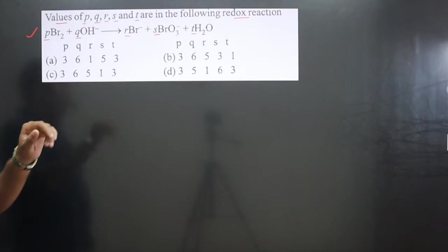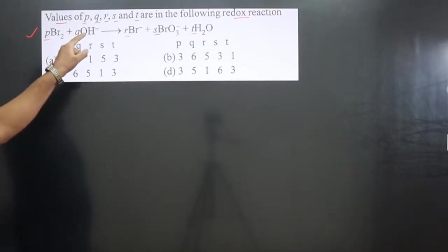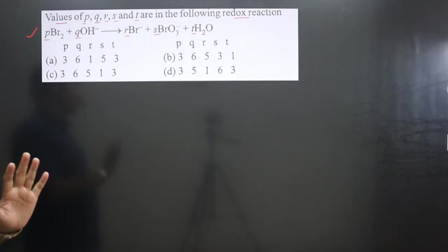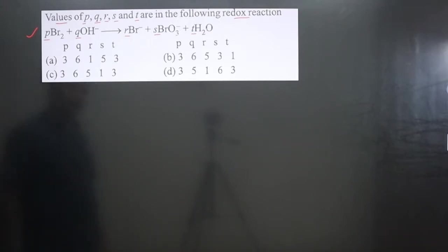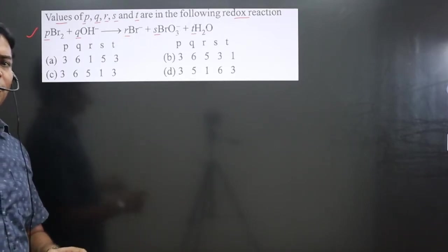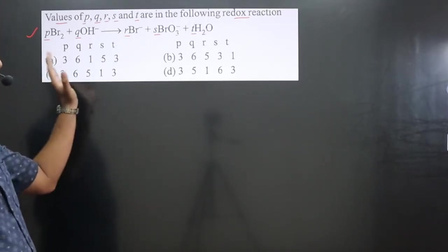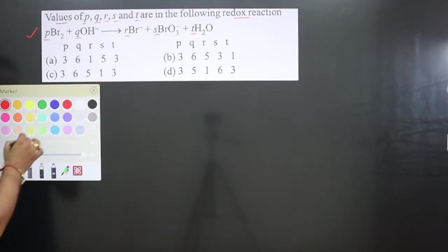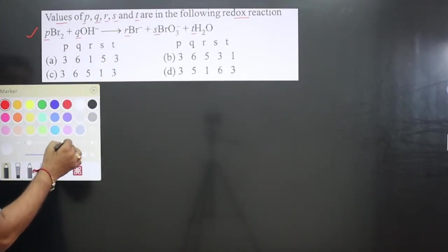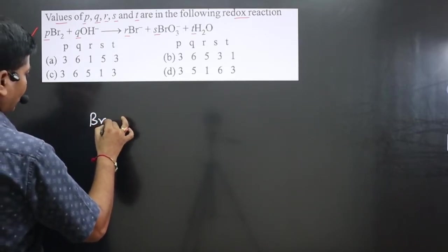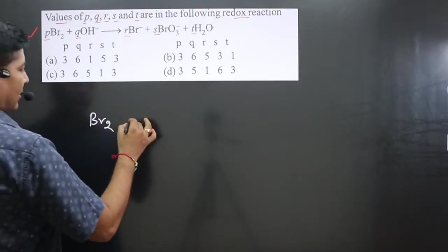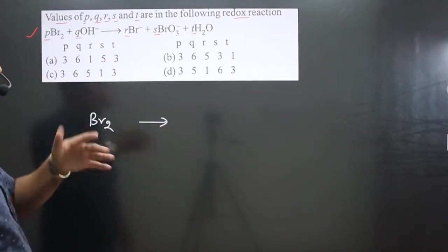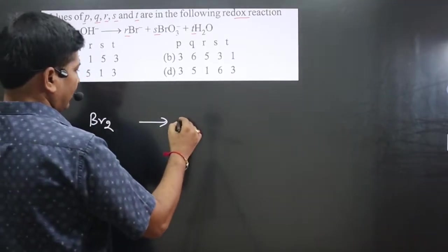If you look at the equation, you can see OH⁻ is given here. It means that the reaction is taking place in basic medium. So first of all, we can balance this equation in basic medium, then we can find out the coefficients. We can write OH⁻ and balance it later on because it is a part of the medium.